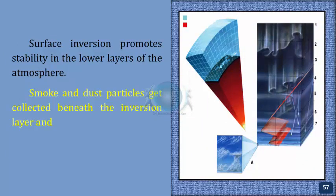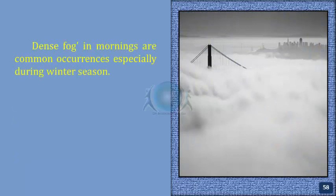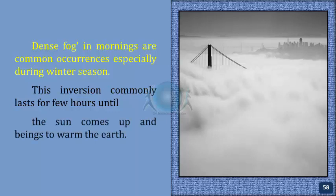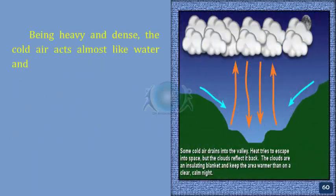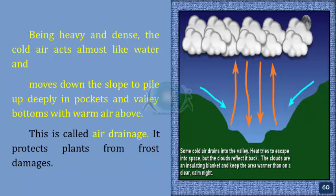Smoke and dust particles get collected beneath the inversion layer and spread horizontally to fill the lower strata of the atmosphere. Dense fog in the mornings is a common occurrence, especially during winter. This inversion commonly lasts for a few hours until the sun comes up and brings warmth to the Earth. In hills and mountains, cold air produced during night flows under the influence of gravity. Being heavy and dense, the cold air moves down the slope to pile up deeply in pockets and valley bottoms, with warm air above. This is called air drainage, and it protects plants from frost damage.